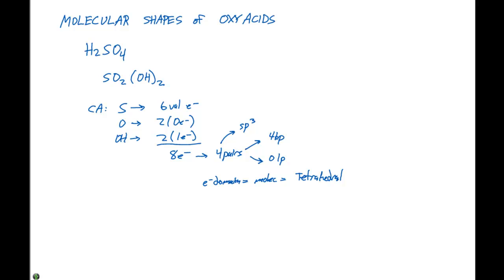So now that we have all this established, we can actually draw out the structure. We have sulfur, it's going to form four bonds: one to an oxygen, another to an oxygen, and two to an OH group. So this is what the octet rule would predict.